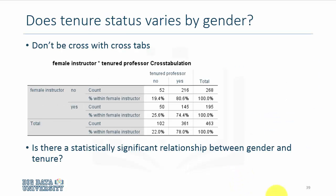If we have two categorical variables, we can do a cross-tabulation between the two, and it will reveal some very interesting insights. For example, if you're interested in the question if tenure status varies by gender, we do a cross-tab between female instructors and tenured professors, and the result is presented here.